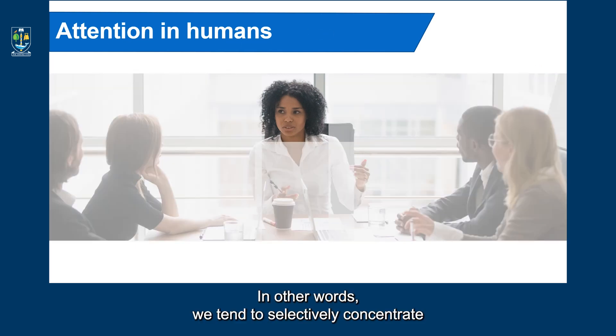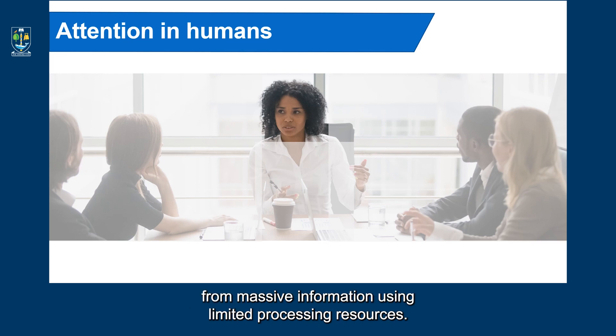In other words, we tend to selectively concentrate on a part of the information when and where it is needed, and we ignore a large amount of information at the same time. In this particular example, we're not going to observe the whole scene, but instead observe and pay attention just to specific parts. And this applies to all our senses. This is a means for us to quickly select high value information from massive information using limited processing resources.